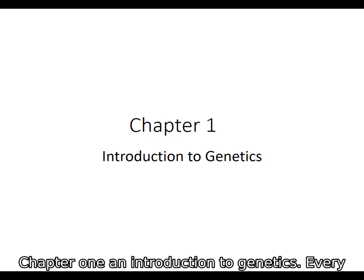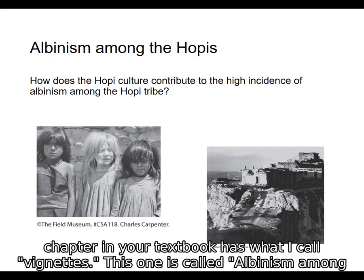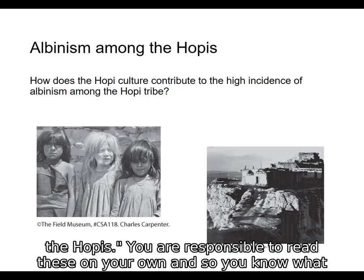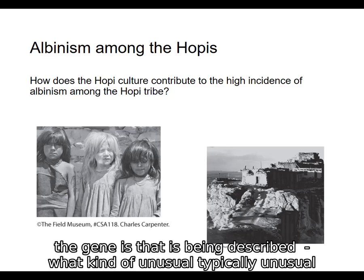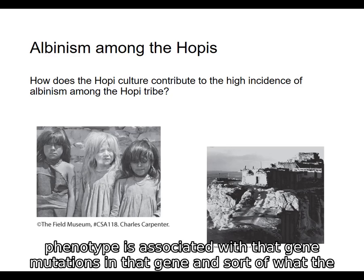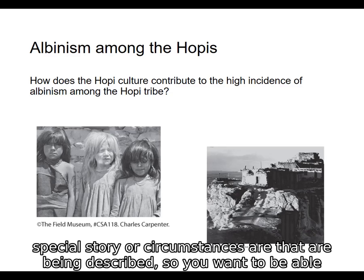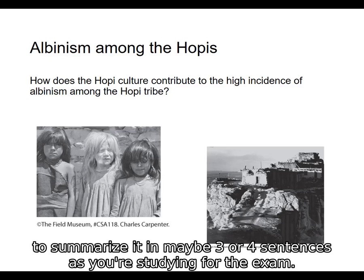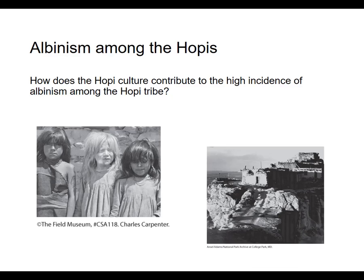Chapter 1: An Introduction to Genetics. Every chapter in your textbook has what I call vignettes. This one is called 'Albinism among the Hopis.' You are responsible to read these on your own and to know what the gene is that is being described, what kind of typically unusual phenotype is associated with that gene, mutations in that gene, and what the special story or circumstances are that are being described. Be able to summarize it in maybe three or four sentences as you're studying for the exam.